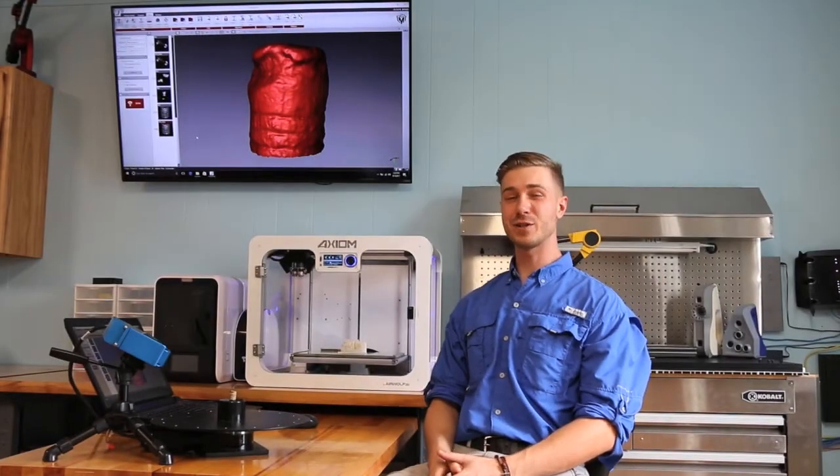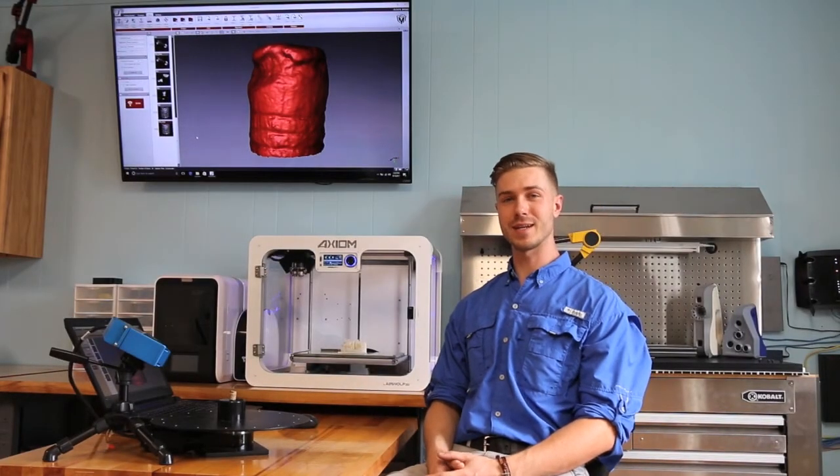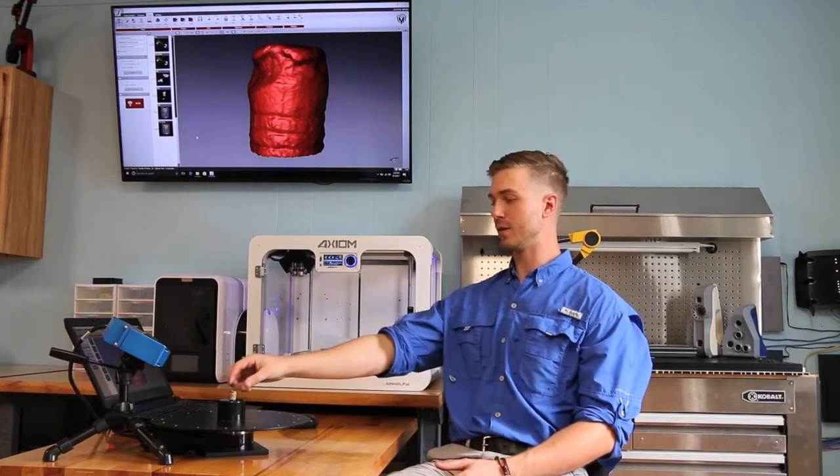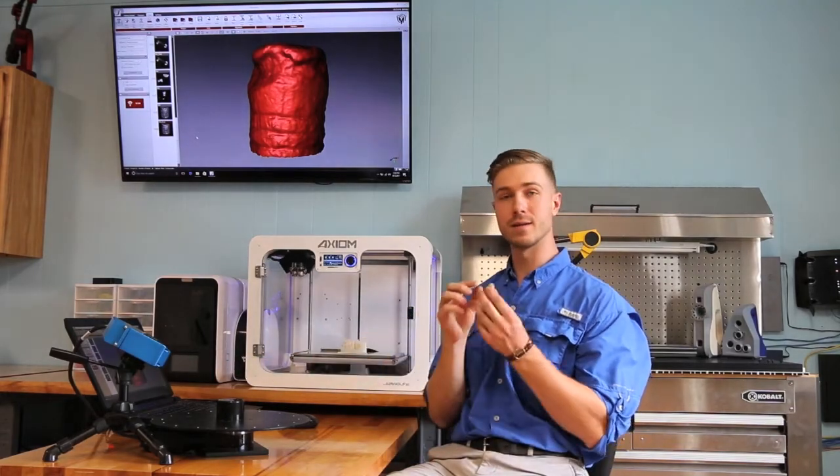Hello, today we're going to be taking a look at an HDI 109 3D scanner with a rotary table. We're going to be scanning this mini bullet.